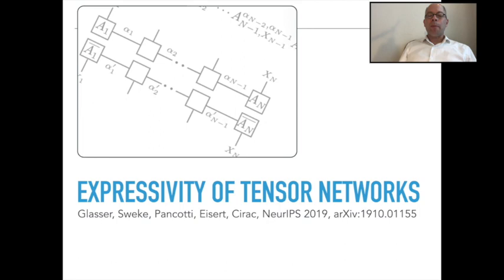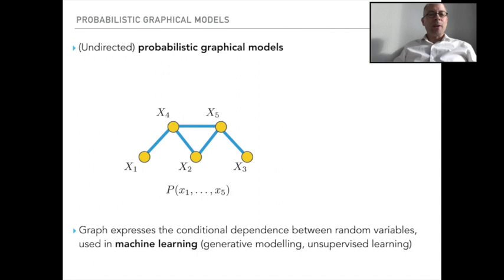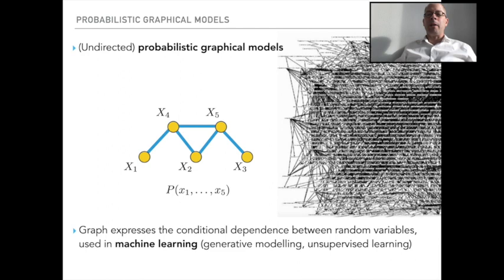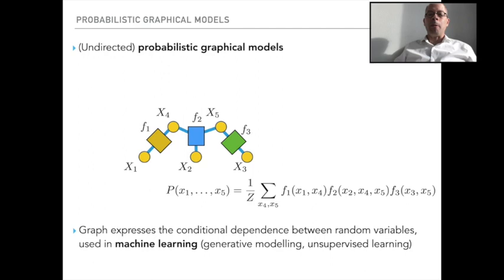The starting point of our journey are graphical probabilistic models — structures that embody probability distributions in a clever way. Here, a graph expresses the conditional dependence between random variables, used in many readings of machine learning, specifically in generative modeling and unsupervised learning. This is a simple example of such an undirected graphical model. The point is that such an undirected graphical model defines a factorization of the joint probability, and the maximum cliques in that graph correspond to one term each — it is a way of organizing probabilities with specific dependencies.